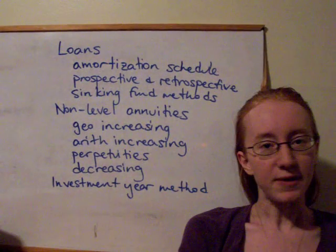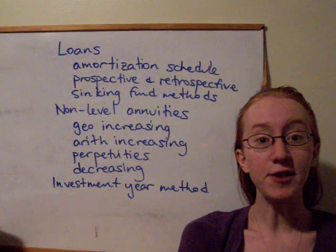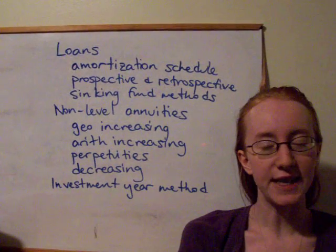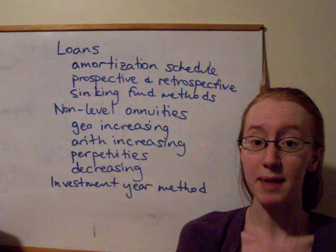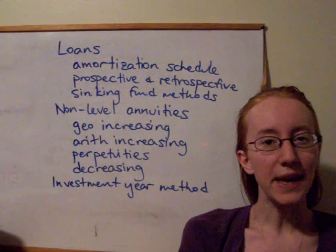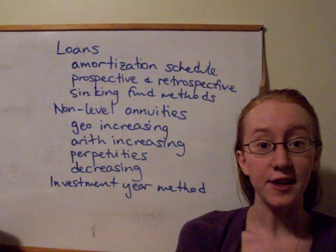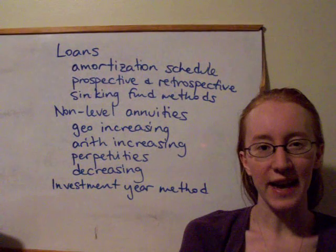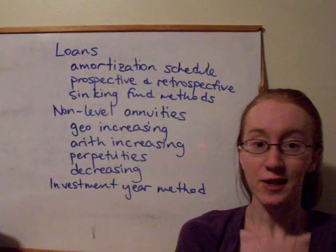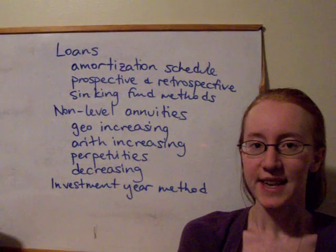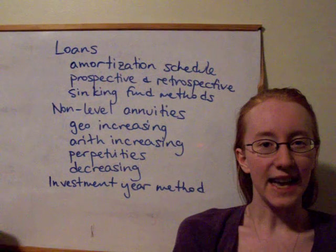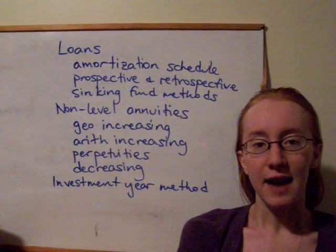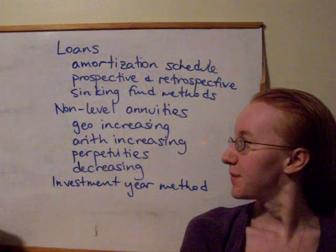We looked at a number of different situations. If we have a geometrically increasing payment — so each payment is (1 + g) times the previous payment — what we can do is recognize that we still get a geometric series, and we can develop a result to calculate that easily using our knowledge of geometric series. We basically calculate a new artificial interest rate, i-star, and we calculate the annuity based on that.